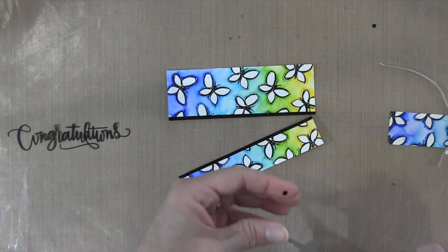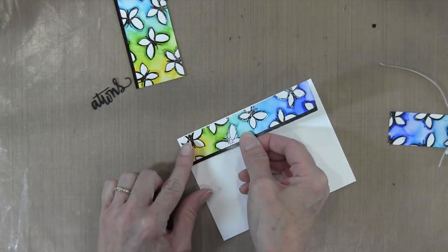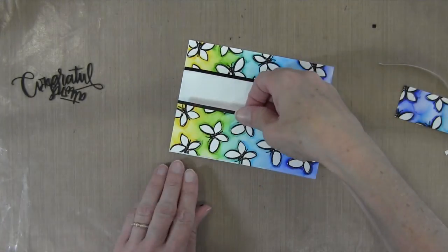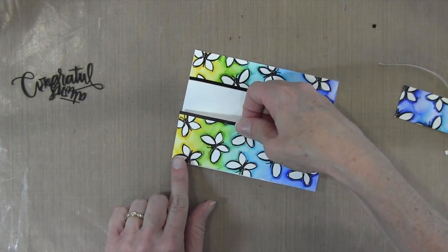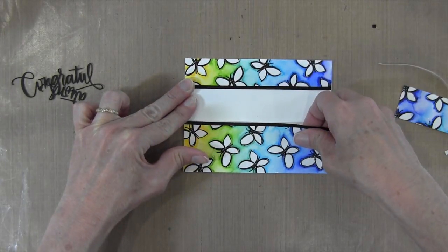Once I get that all trimmed off, I'm going to get my card base and arrange all my pieces. I'm going to put the bottom one on first and then the top one. I'm just using ATG tape runner to adhere this. Because the watercolor paper is thinner, it's really straightening out as I adhere it to my card base.